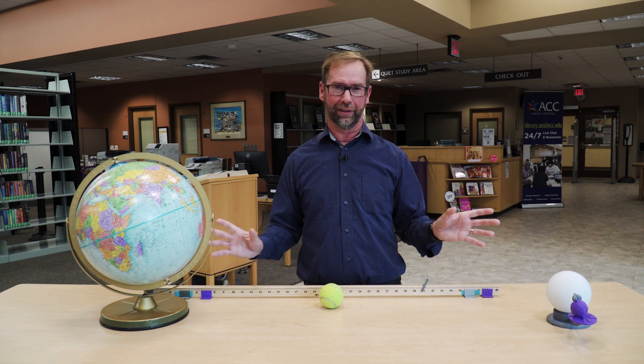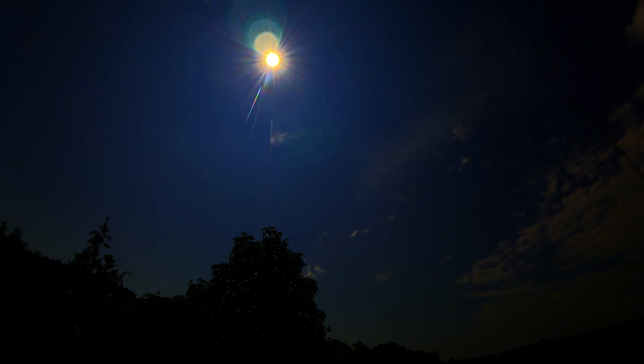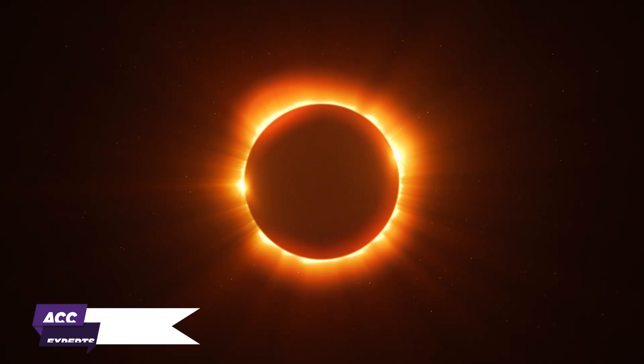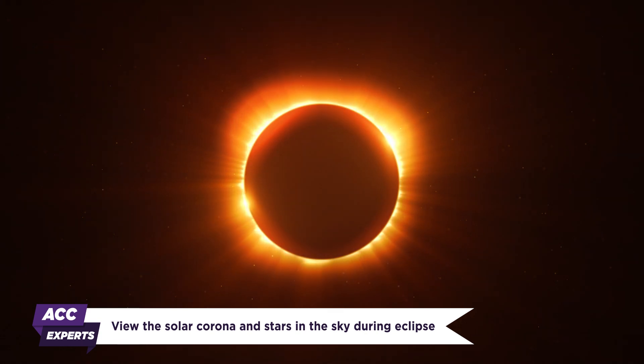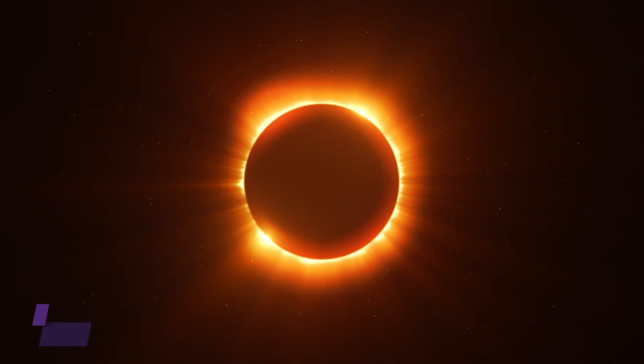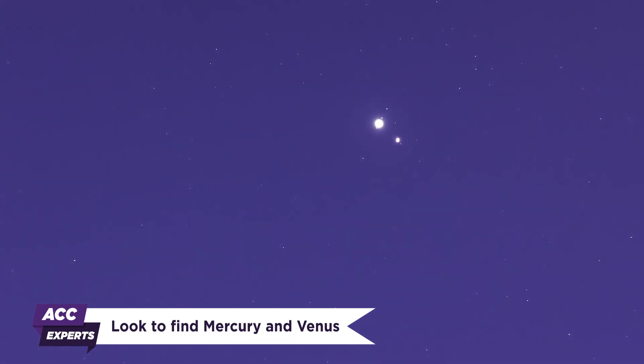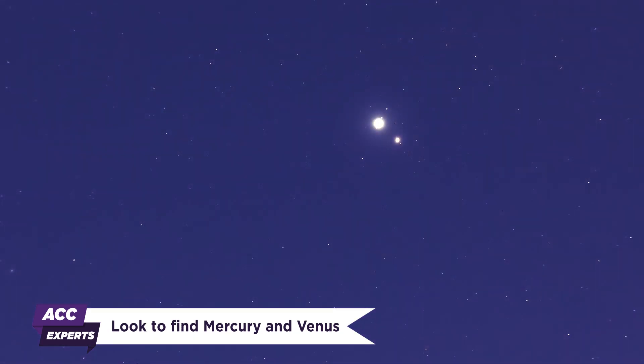First of all, it gets dark — that you probably expect. But it's a weird darkness; it's not like night. It won't get pitch black, but it gets very close to a very dark twilight. It's dark enough that when you look up you see the solar corona — the outermost atmosphere of the Sun — like a ghostly glow emanating from around the Moon. And then of course you see stars; it's so dark you see the brightest stars in the sky. You also see the planets — very easily Mercury and Venus, which are always close to the Sun in your sky.